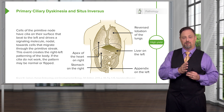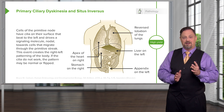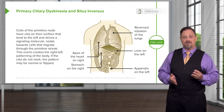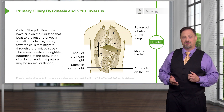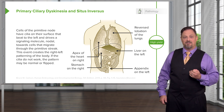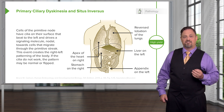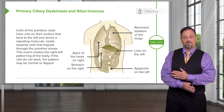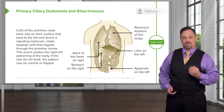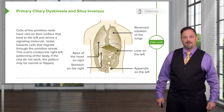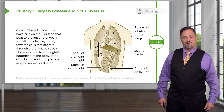If those cilia are immobile and do not push nodal to the left, then both sides of the body receive equal amounts of it, and the body has to flip a coin to determine what side is left and what side is right. In half the people with ciliary dyskinesia, you will find situs inversus, where the organs are flip-flopped because the body took the opposite route than normal.